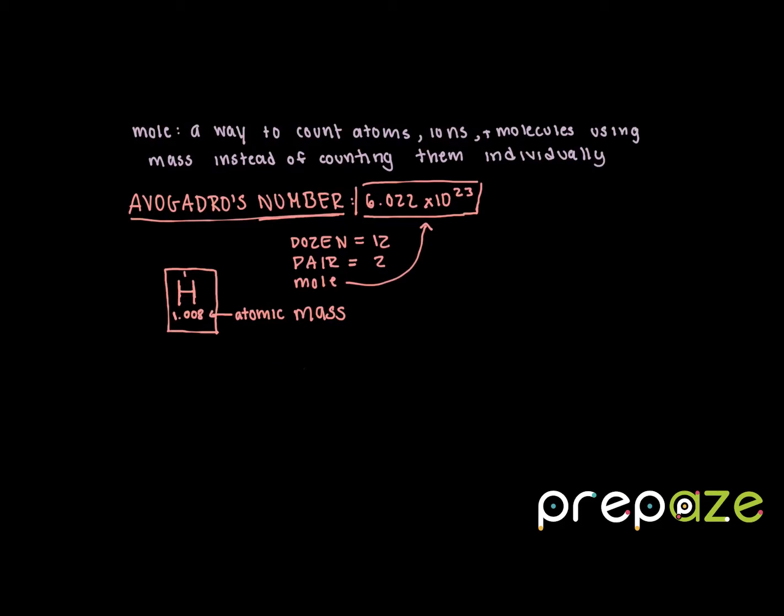What this means is to get this many hydrogen particles—to get 6.022 times 10 to the 23rd hydrogen particles, which we can also just say as a mole of hydrogen particles—we are going to need 1.008 grams of hydrogen.